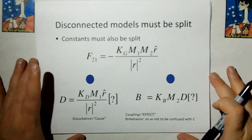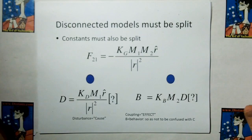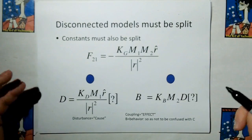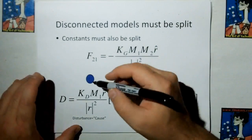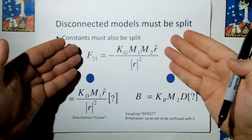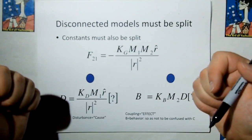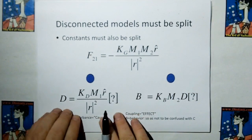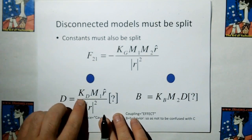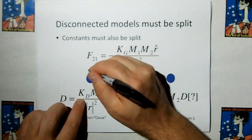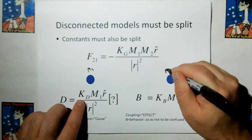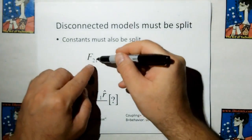So what we learn is disconnected models must be split. Also the constants must be split. In other words, if we have this guy over here, if we're looking at the gravity model, then we can say that the consumption of ether is related to some constant times the first mass. This is mass one, this is mass two. We're looking at the force on two due to one.